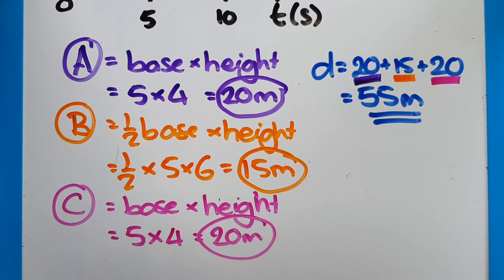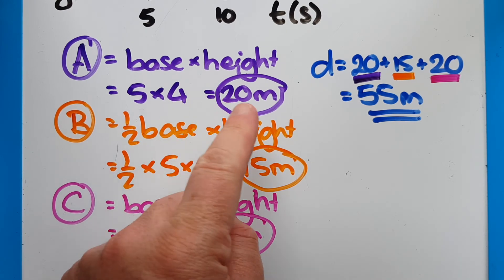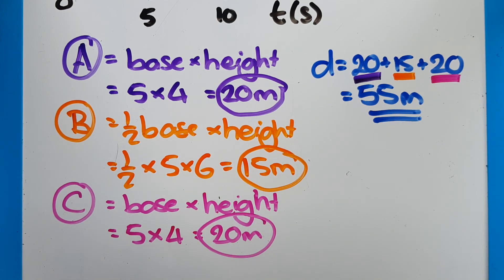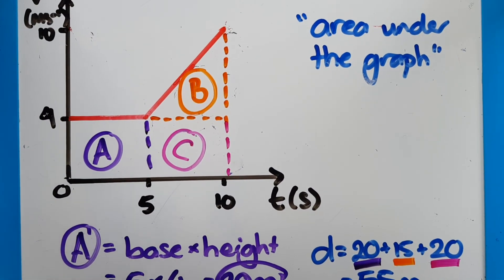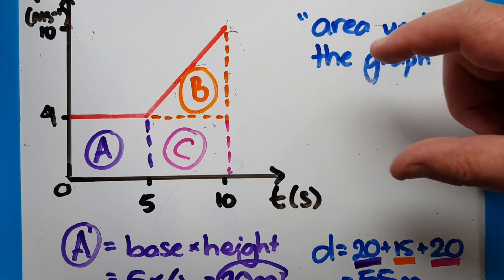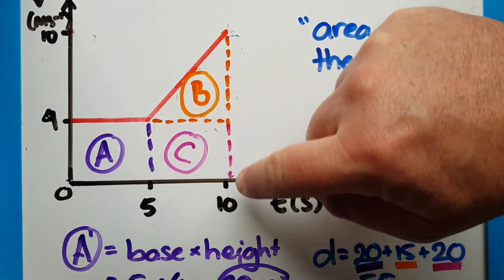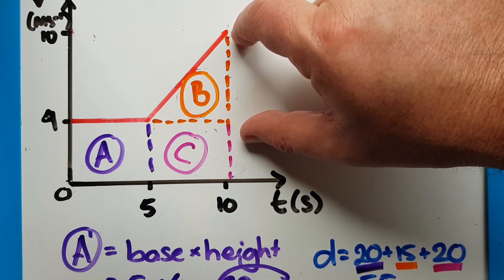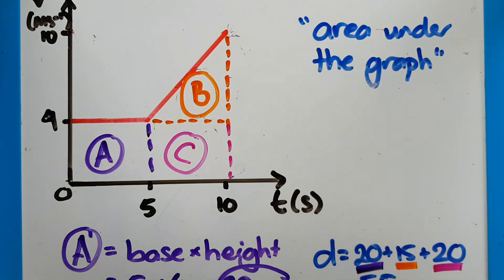This is our trickiest thing that we have to do with speed-time graphs. We then add those values together. So the 20 plus the 15 plus the 20 means that our total distance is 55 meters. Now the hardest bit in this is just checking that you are using the actual height of the polygon, not the entire height. So its height is not 10 for the section of B, it's only six for that bit there. That's the most common error that is made with something like this.